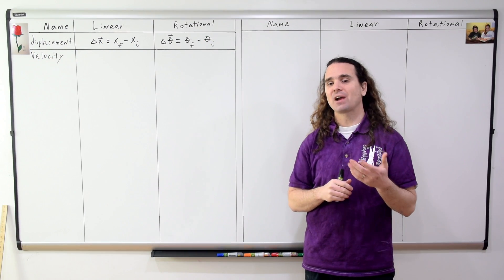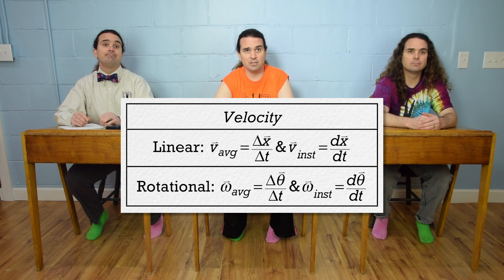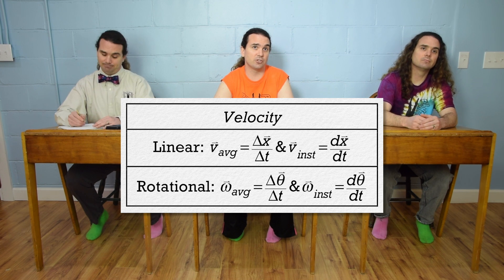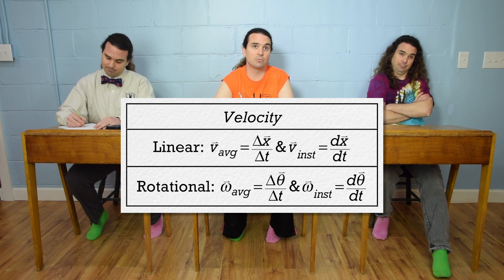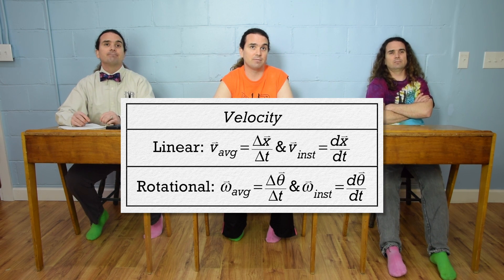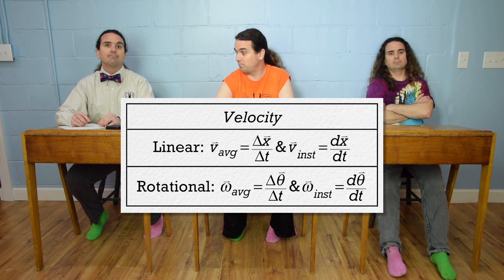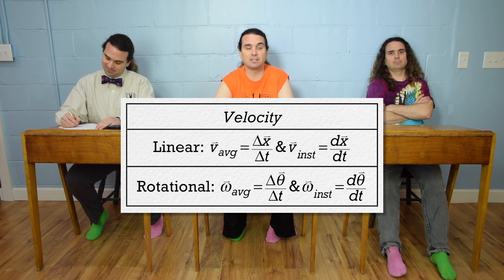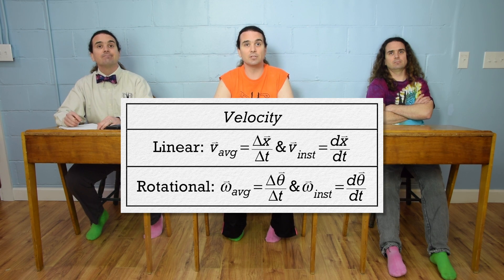Bobby, how about the equations for average and instantaneous velocity? Average velocity equals change in position over change in time, and instantaneous velocity equals the derivative of position with respect to time. Velocity is a vector. We use the symbols for linear and angular position Billy just identified. And the symbol for angular velocity is a lowercase omega, which looks like a curly w.